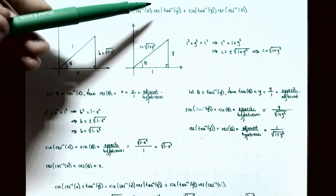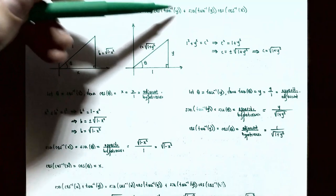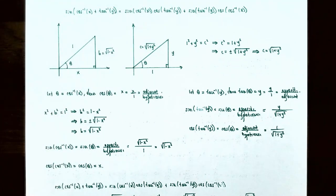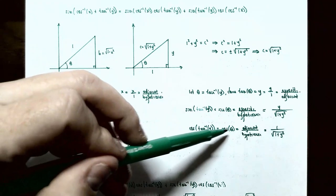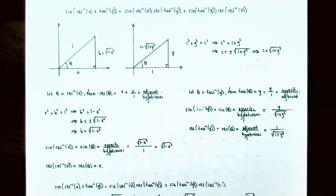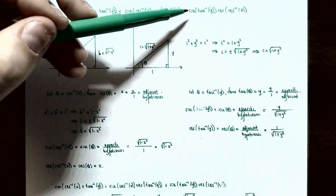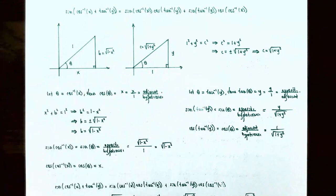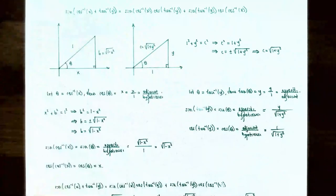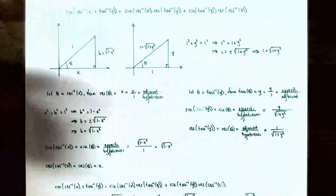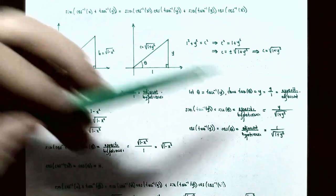Cosine of inverse tangent of y is cosine of theta, which is adjacent over hypotenuse — that's one divided by the square root of one plus y squared. Sine of inverse tangent of y is sine of theta, which is opposite over hypotenuse — that's y divided by the square root of one plus y squared. So we now have algebraic expressions for all four factors needed.